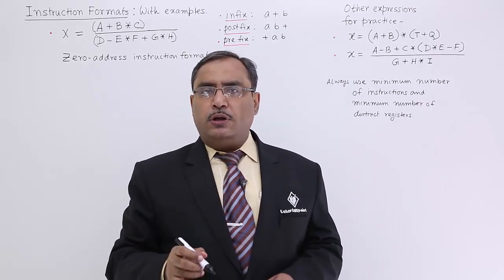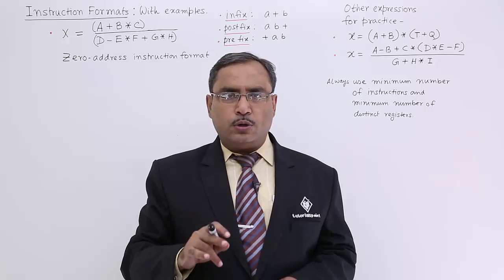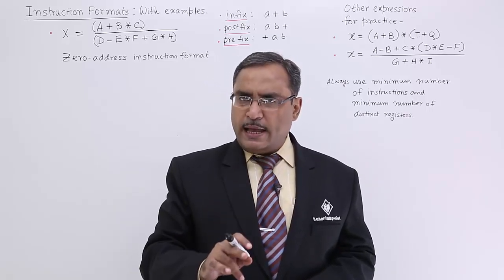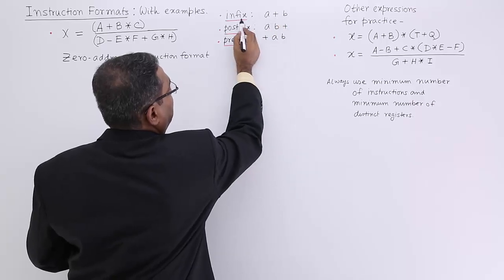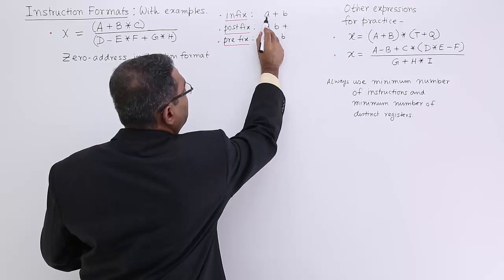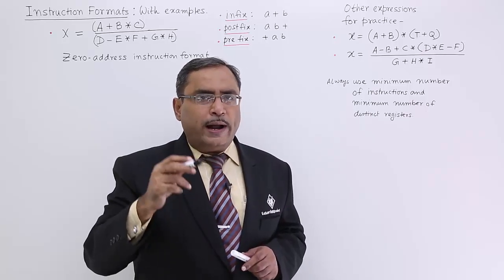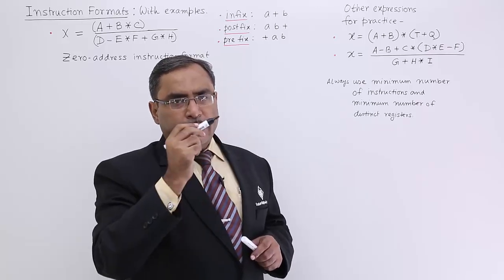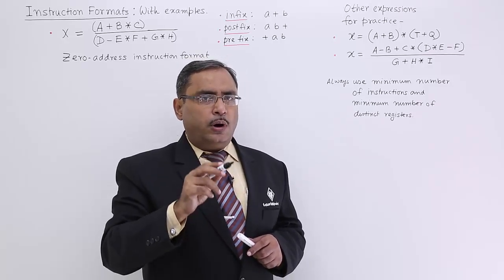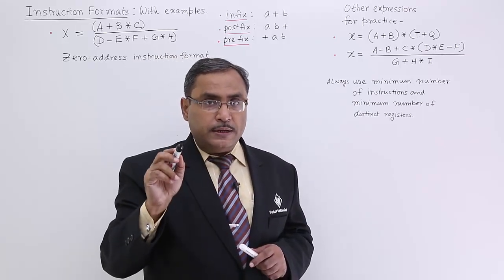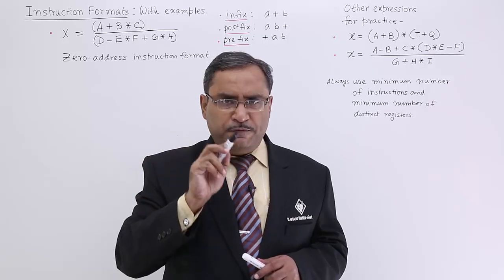Before discussing this particular code, let me tell you there are three algebraic notations possible: they are infix, prefix, and postfix notations. In case of infix notation, we have a + b — the operator is in between operands. In case of postfix, the operator goes at the last, so we write a b +. In case of prefix, the operator comes at the front, so we write + a b.